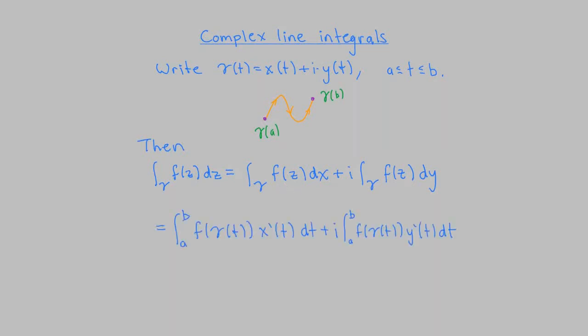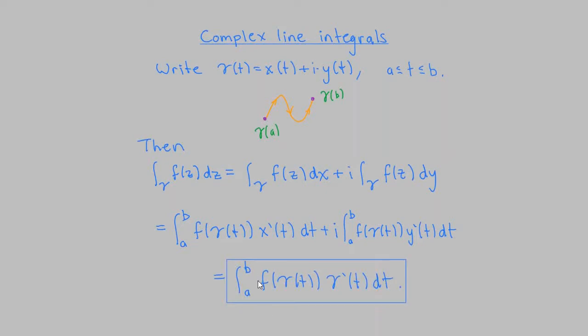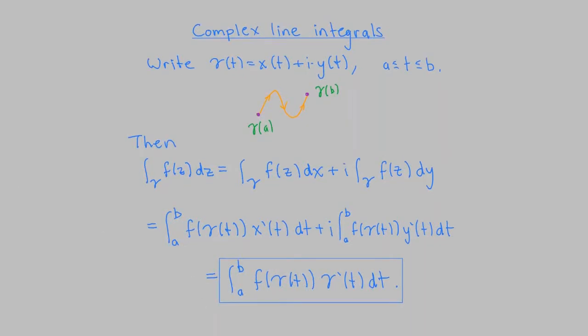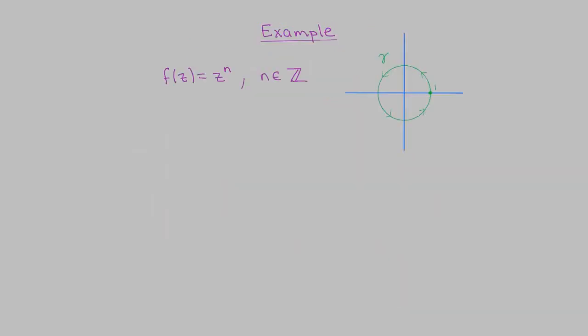Using the definition of the line integral from multivariable calculus, the first integral equals the integral from a to b of f(γ(t)) x'(t) dt, and the second piece equals i times the integral from a to b of f(γ(t)) y'(t) dt. Recombining the integrands, we can write this succinctly as the integral from a to b of f(γ(t)) γ'(t) dt. You need to remember this because even after we develop powerful machinery, there will still be times when you have to compute complex line integrals directly.